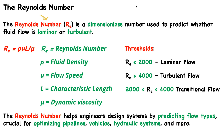For this, we have the Reynolds number — a dimensionless number used to predict whether fluid flow is laminar or turbulent. To determine the Reynolds number, we use the following expression: Re equals the product of rho (fluid density), u (flow speed), and l (characteristic length), all divided by mu (dynamic viscosity).